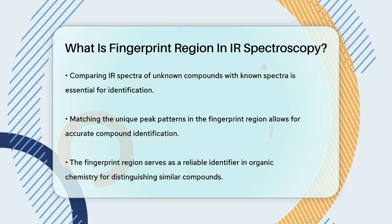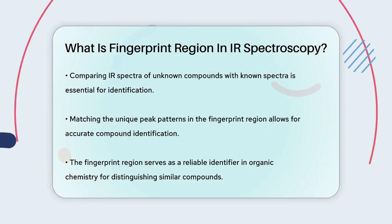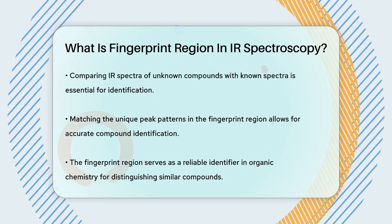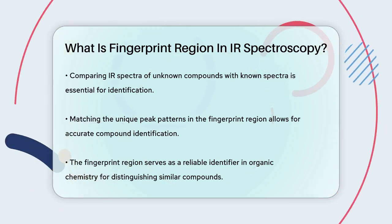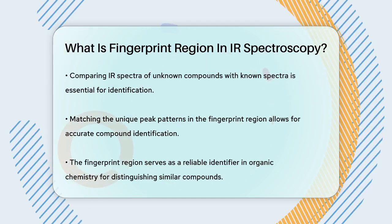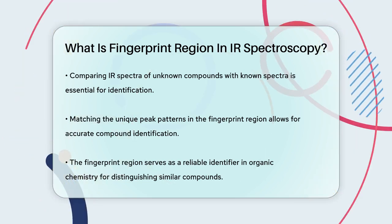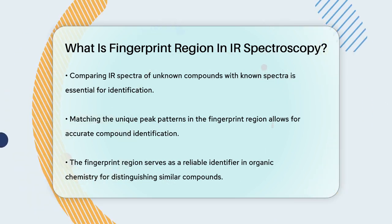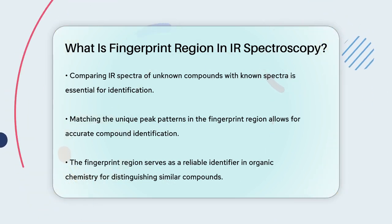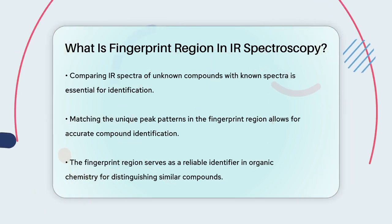So, the fingerprint region is like a unique identifier for molecules, helping you distinguish between them even when they share similar functional groups. It's a powerful tool in organic chemistry for identifying and analyzing compounds accurately.